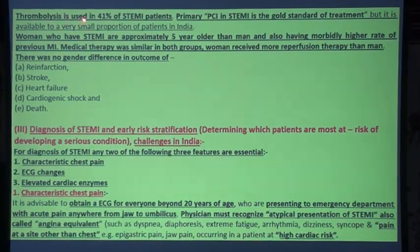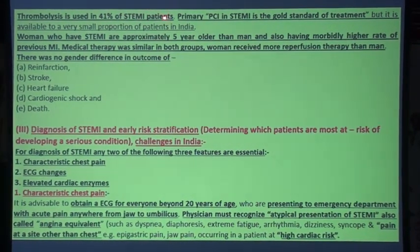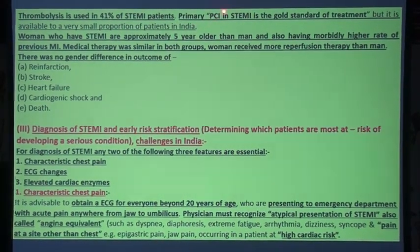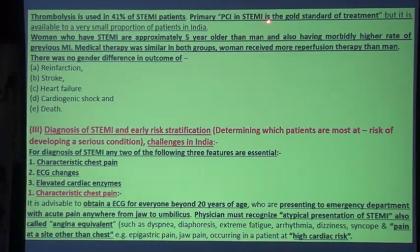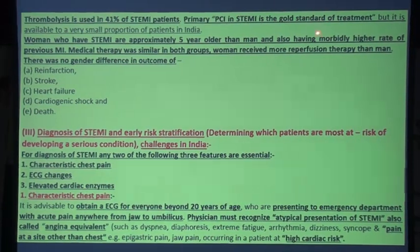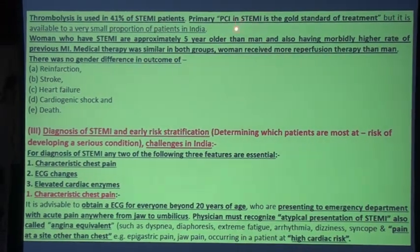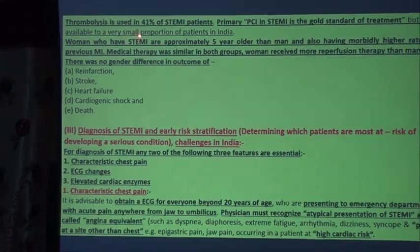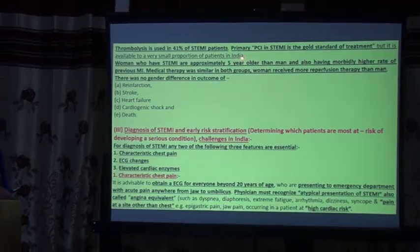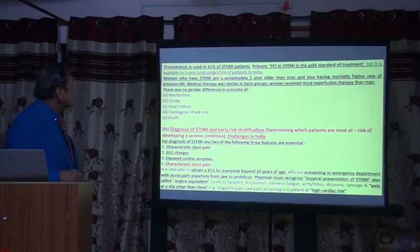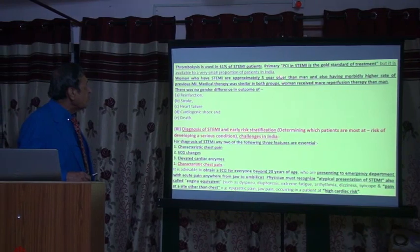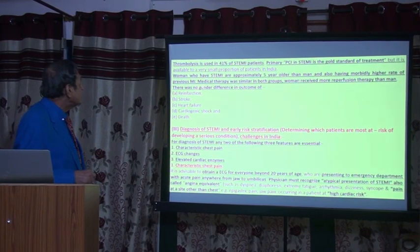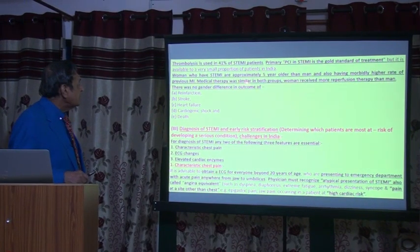Indian men are younger than Western men due to risk factors like hypertension, high cholesterol, low HDL, diabetes, obesity, and genetic factors. STEMI constitutes one third of all acute coronary syndrome patients. Thrombolysis is used in 41% of STEMI patients. Primary PCI — percutaneous coronary intervention — is the gold standard of treatment, but it is available to only a very small proportion of patients in India.